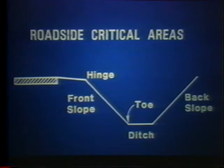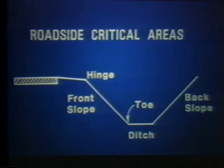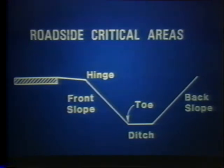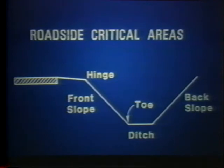Here you see the critical areas of roadside cross section: the position of the hinge point at the top of the front slope, the steepness of the front slope, the toe of the front slope, the shape of the ditch, and the steepness of the back slope. We'll look at what happens to a vehicle as it crosses each area, and we'll see how each area affects safety.